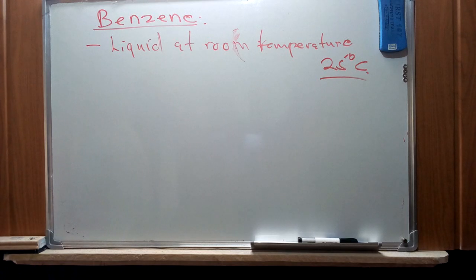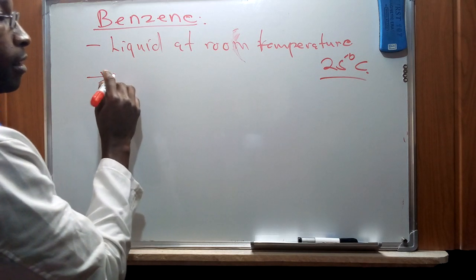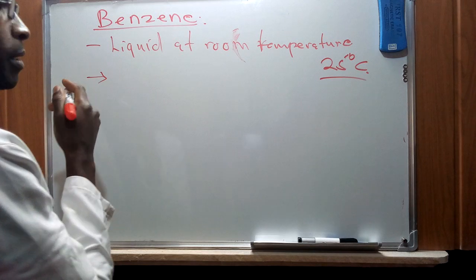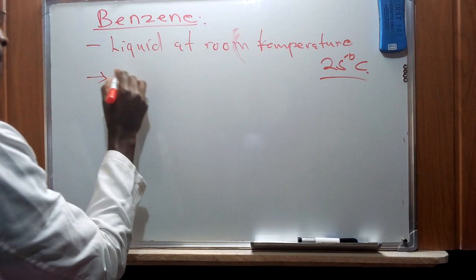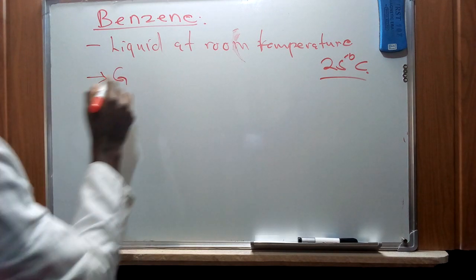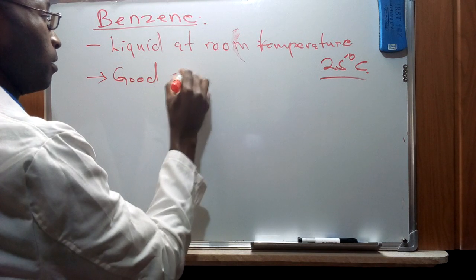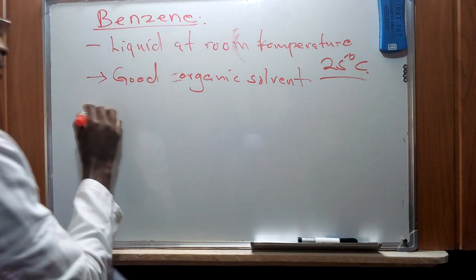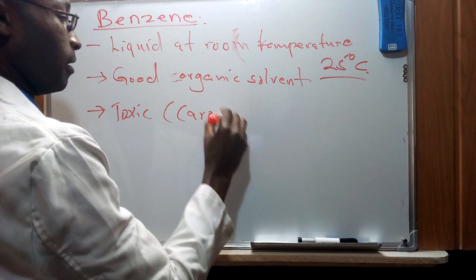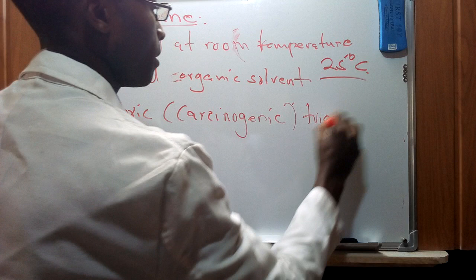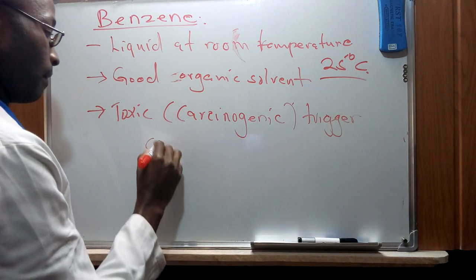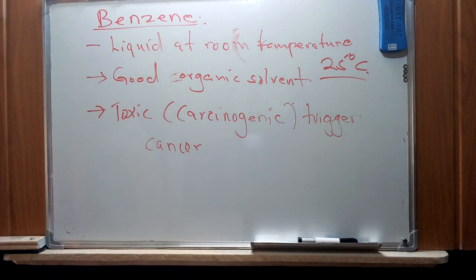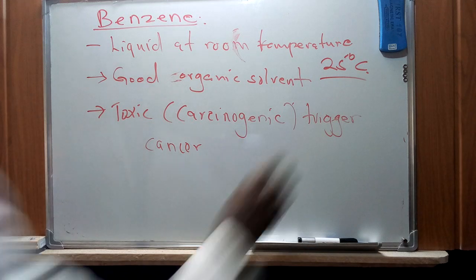Benzene is a good organic solvent but it is toxic. We're going to learn about the concept of carcinogens — substances which can trigger cancer. Benzene is carcinogenic, meaning it can trigger the condition of cancer. These are some brief properties of benzene; we're going to learn additional ones and characteristics of its derivatives as we go on.